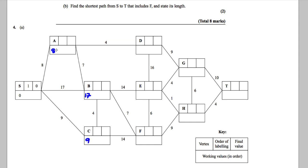You pick the smallest out of 8, 17, and 9, which is clearly this one. So you label this permanently, your second permanent one, and it's 8 to get to there.